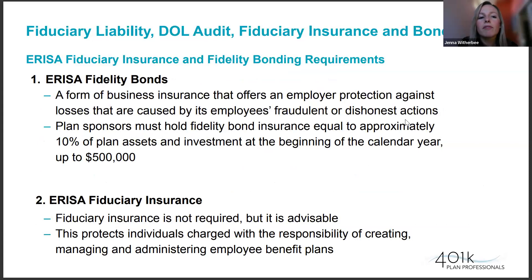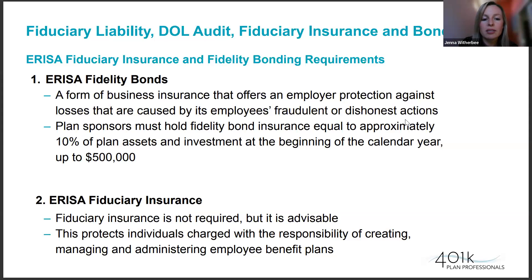There are two types of fiduciary insurance and bonding — make sure you know the distinction. First, ERISA fidelity bonds: required on all plans and a question on your annual Form 5500. You need fidelity bond insurance equal to approximately 10% of your plan assets at the beginning of the calendar year, up to half a million dollars. Different from that is ERISA fiduciary insurance, which is not required but is advised. It provides protection on an individual level, protecting fiduciaries and their personal assets if they face charges or lawsuits.